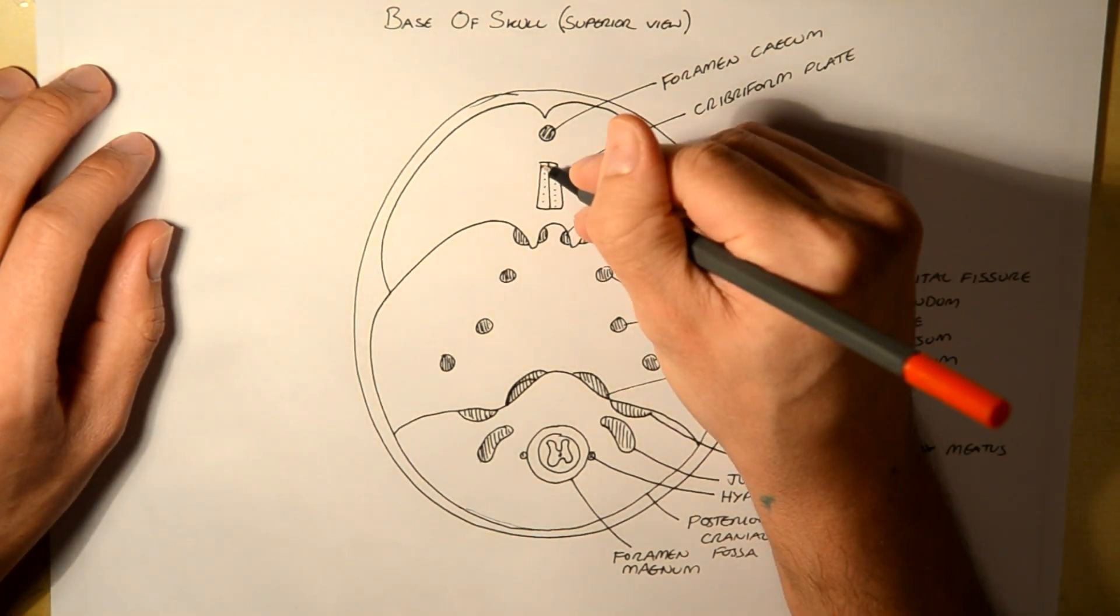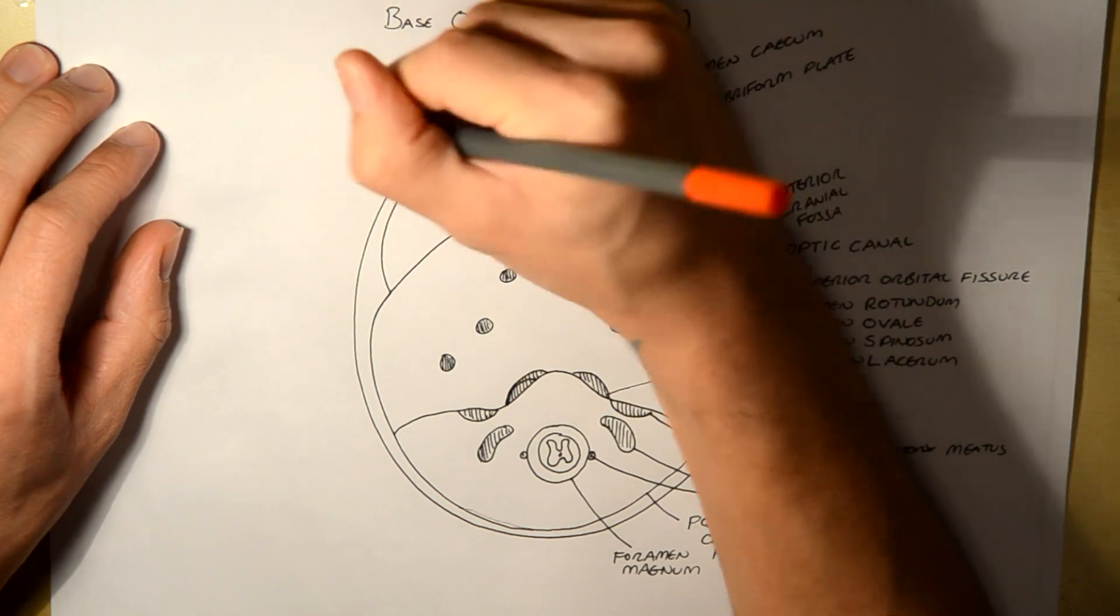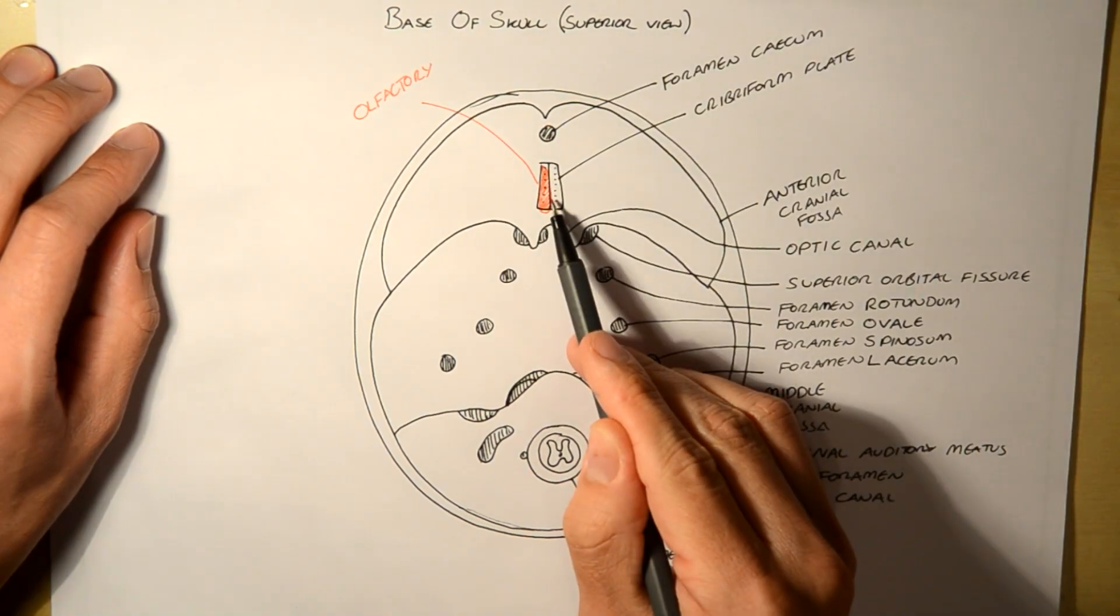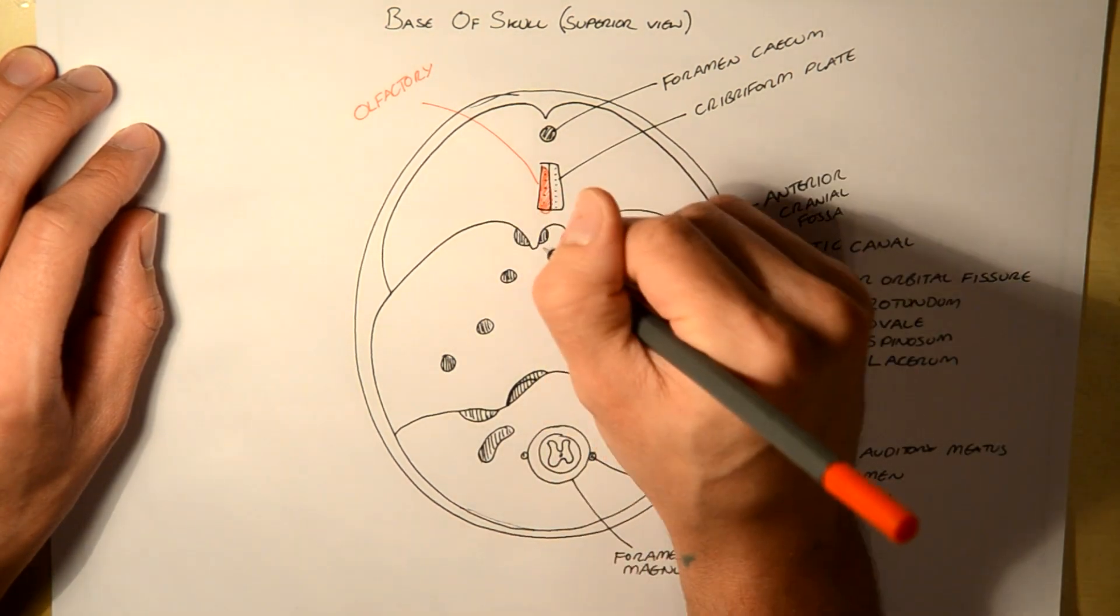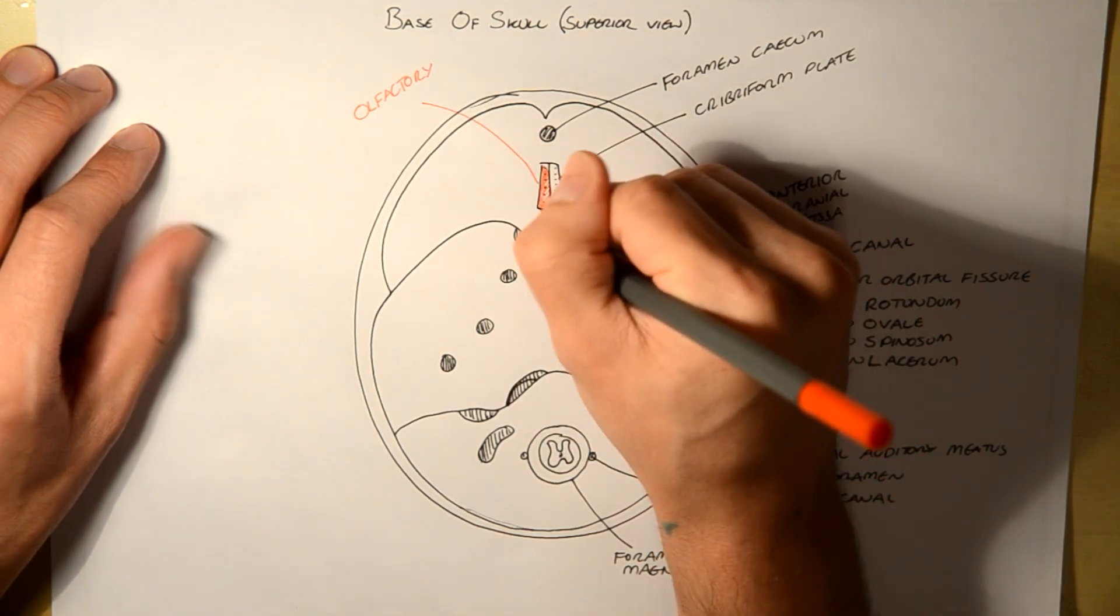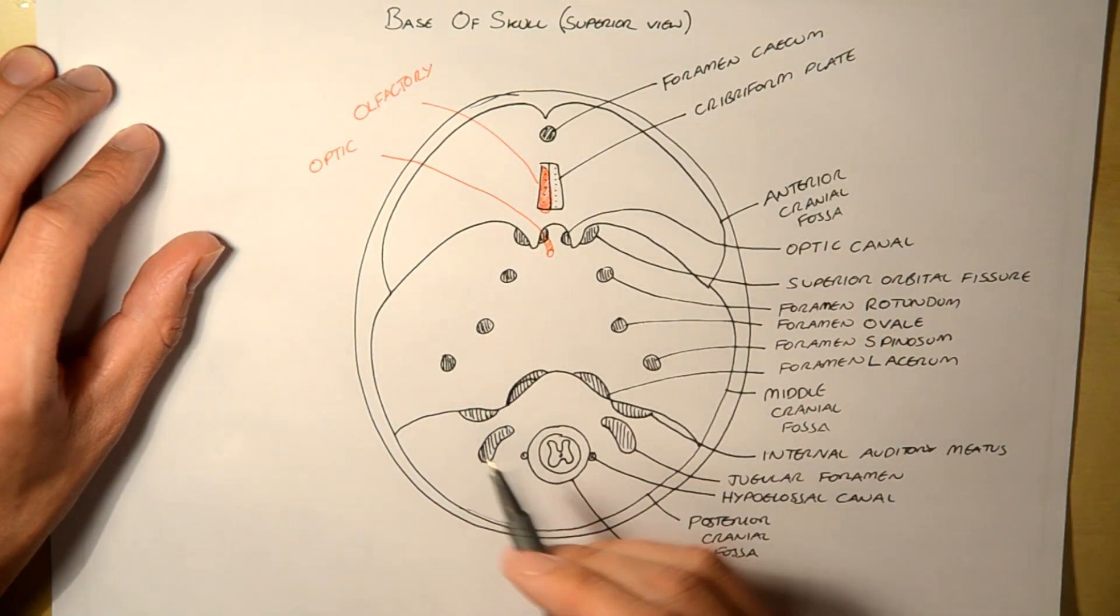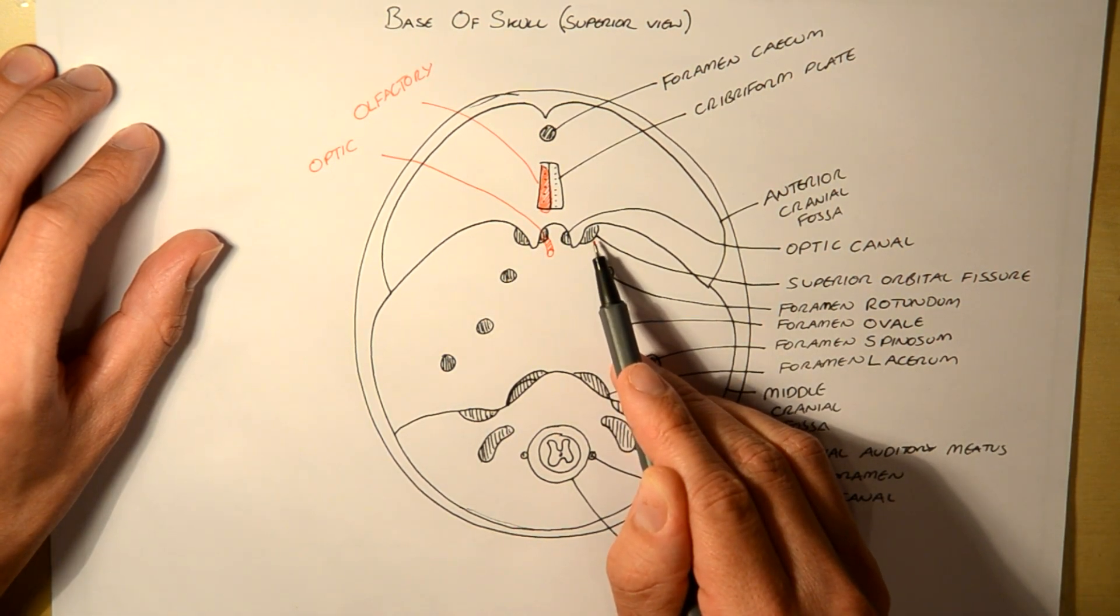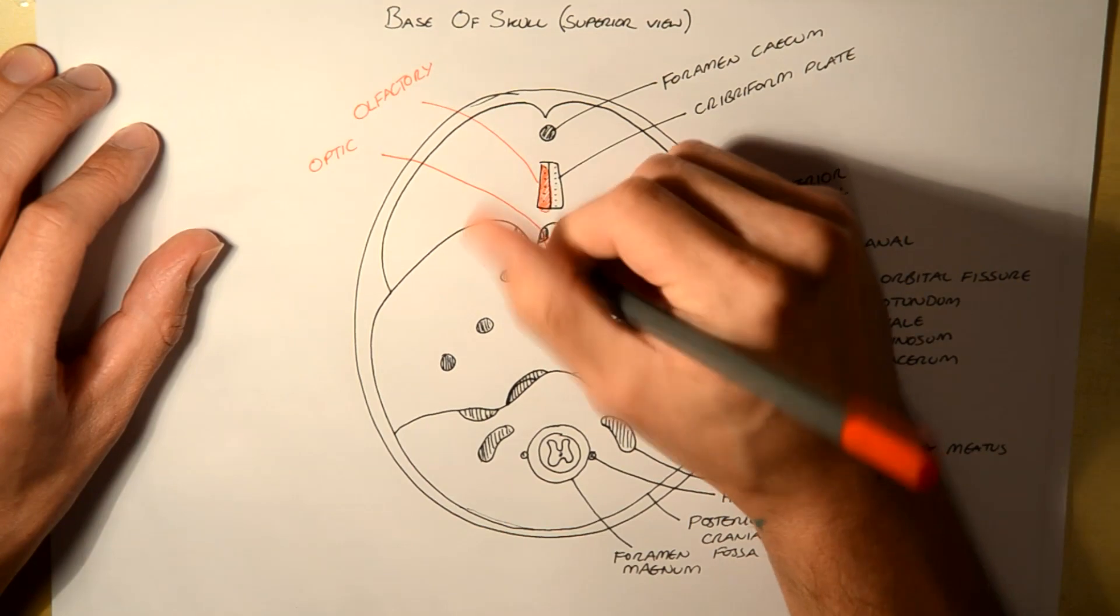So firstly here, you've got olfactory on the cribriform plate. Then moving down into the middle cranial fossa here, from the optic canal, we have the optic nerve. Simple so far.